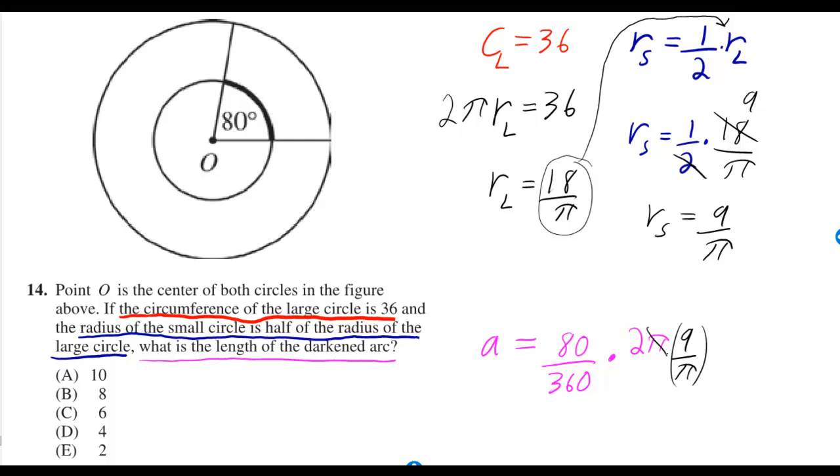Now we can cancel the π's. We can cancel these zeros. 8 over 36, that's 4 over 18. So we have 4 over 18 times 2 times 9. But 2 times 9 is 18, so that cancels with the 18. And we're just left with 4.